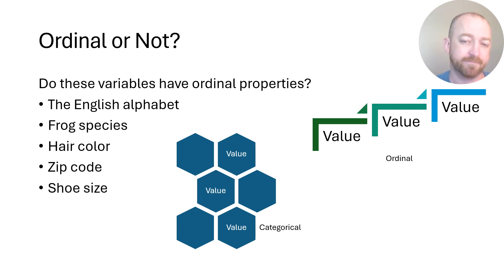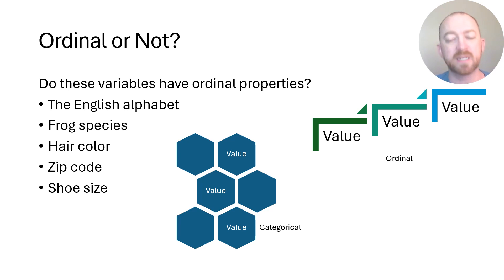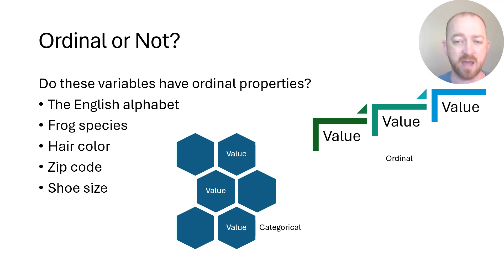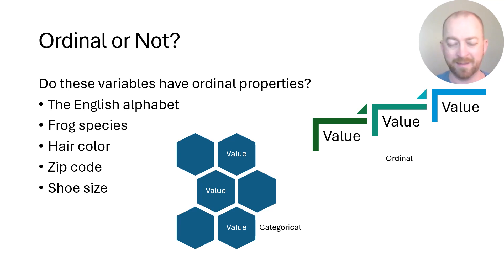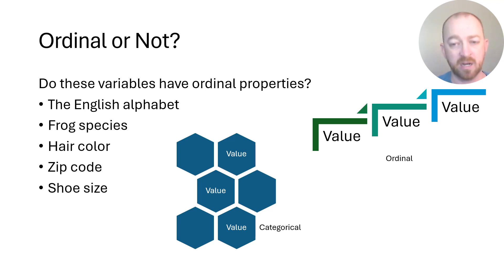Shoe size — obviously this one is at least ordinal. A shoe size of nine is inherently larger than a shoe size of eight in any metric, and so shoe size does have inherent order to it.